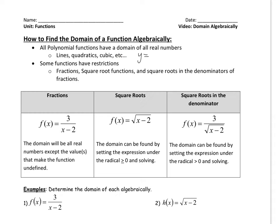So if you don't believe me, you can put an example into the calculator, such as y equals 2x squared plus x minus 1. This here is a good example of a quadratic function. If you put that into the y equals, it's going to look something like this. You see how these arrows are extending both directions, right and left? That means the domain is going to go on forever.